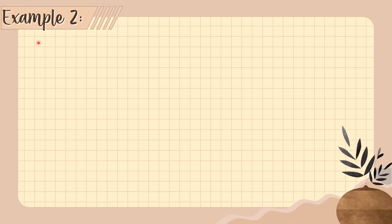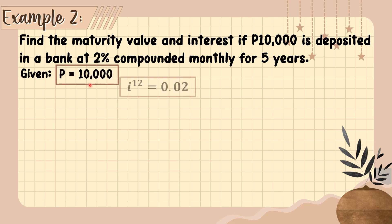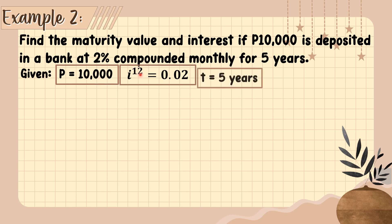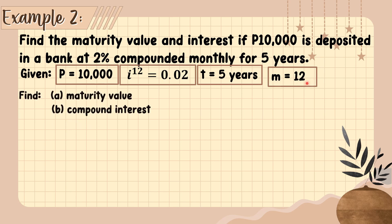Now let's have Example 2. Find the maturity value and interest if 10,000 pesos is deposited in a bank at 2% compounded monthly for 5 years. Our given: principal = 10,000; I sub 12 = 0.02 (compounded monthly, so M = 12 since there are 12 months in a year); T = 5 years.